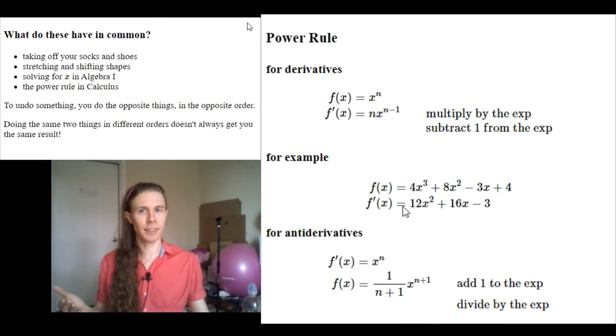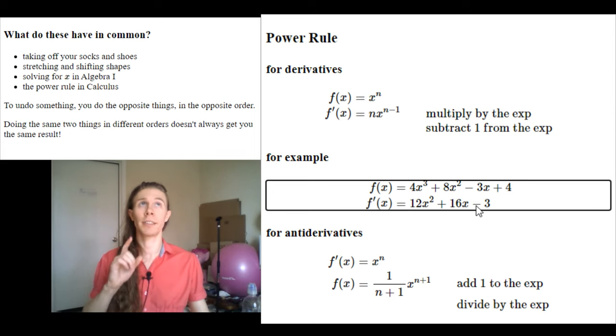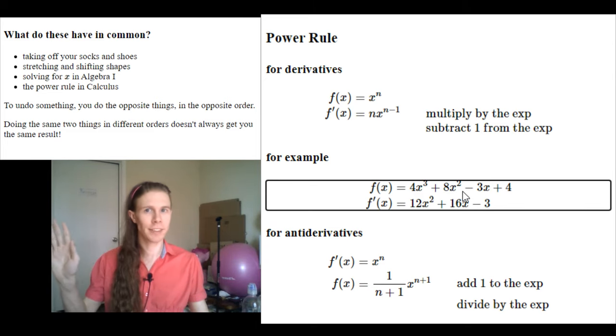And then, that should make this make sense. If I were handed this example f prime here, and asked to find what could be the original function who got this derivative, I'd start with 12x squared. I'd add 1 to the 2, and divide by it. And 12 over 3 is 4x cubed. 16x to the first, add 1 to that 1, and get 2. Divide by it, and get 8. 8x squared. Done.